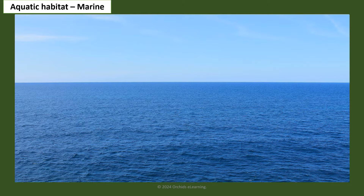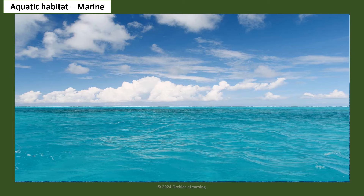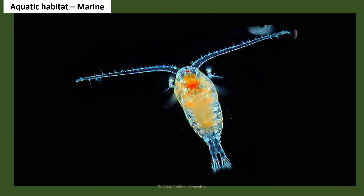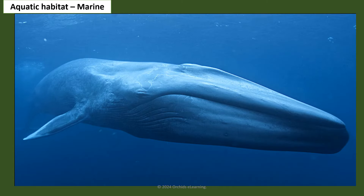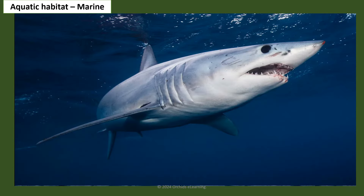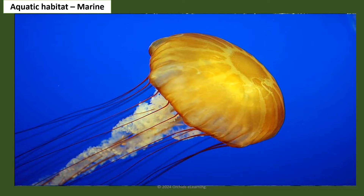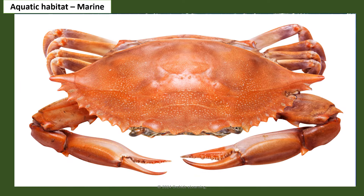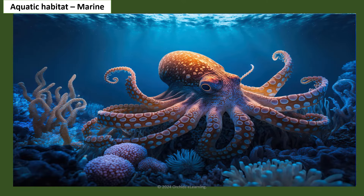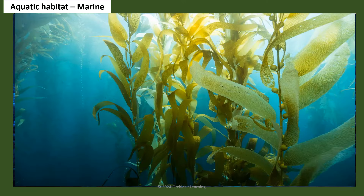Oceans and seas form the largest habitat on the planet. Their water is salty. A large variety of animals live in the marine habitat, from tiny plankton to the largest animal in the world, the blue whale. Fish, whale, shark, jellyfish, crab, starfish, sea turtle, octopus, and seaweed are found in marine habitats.